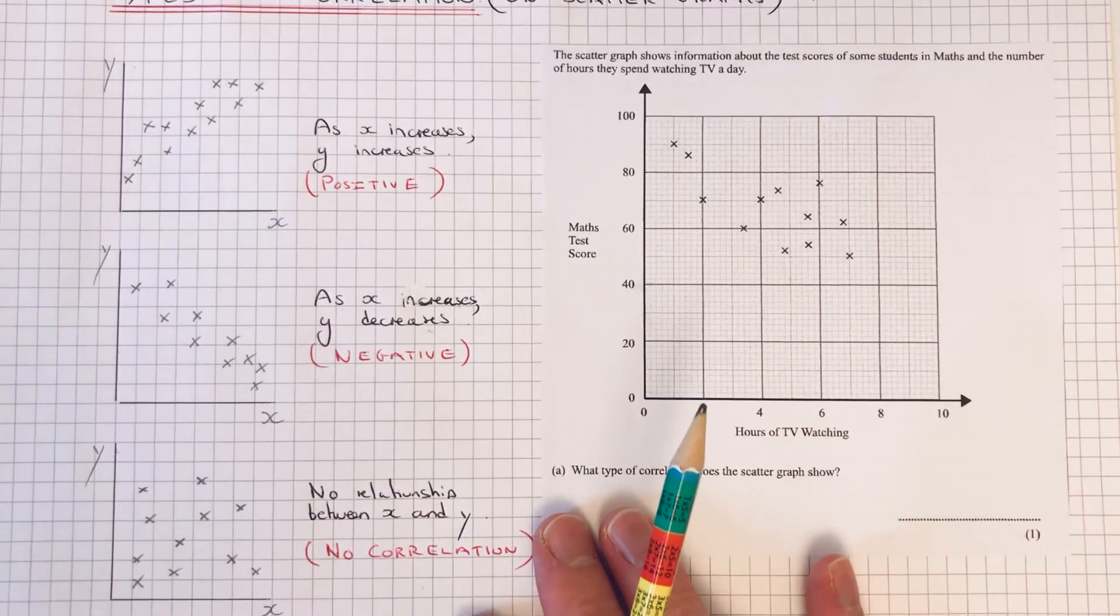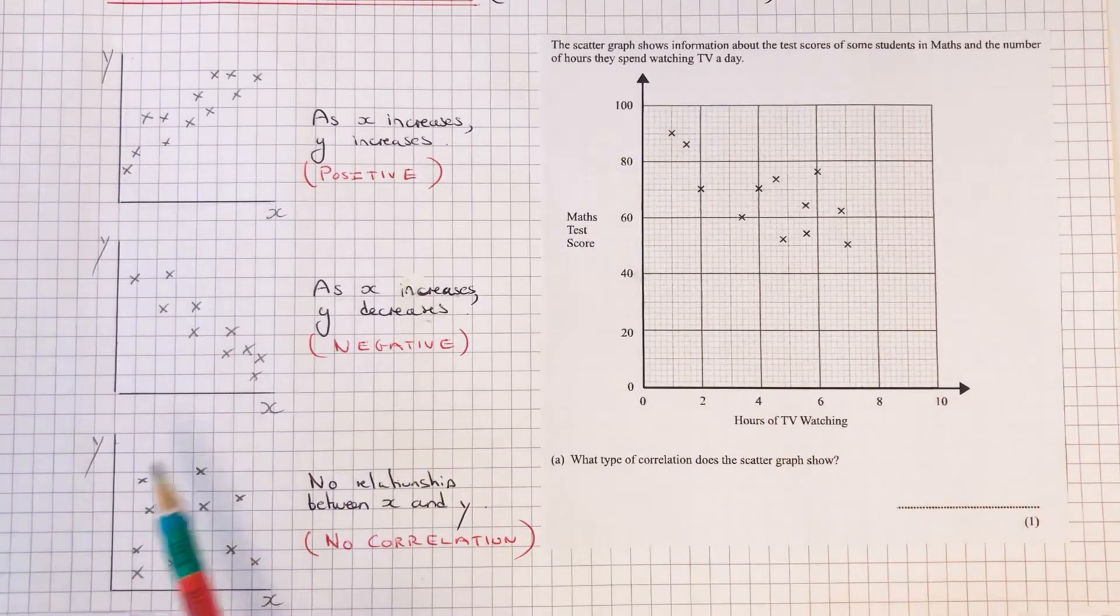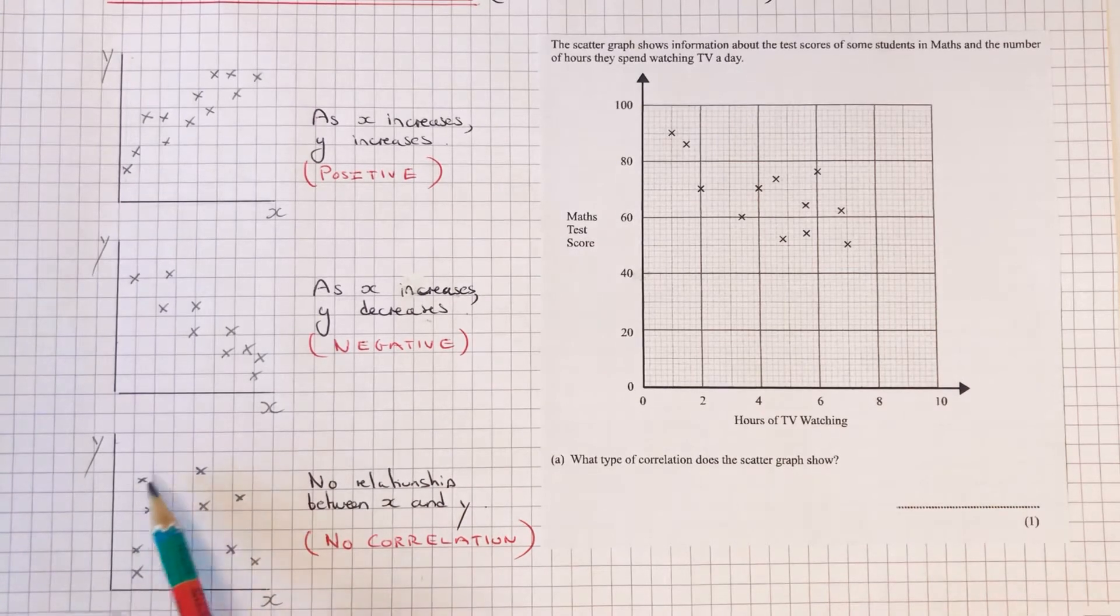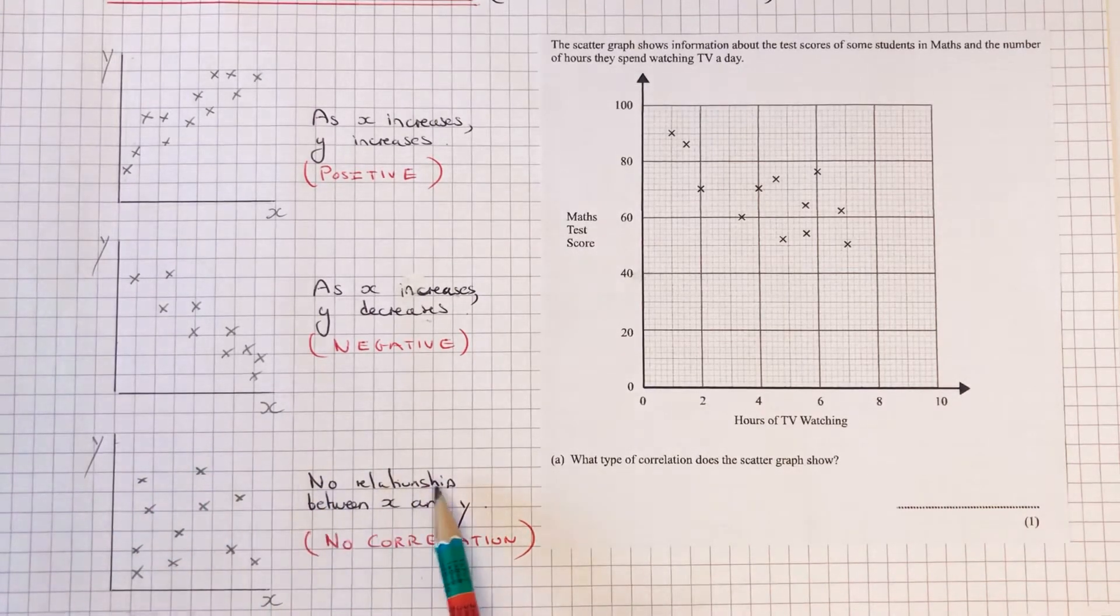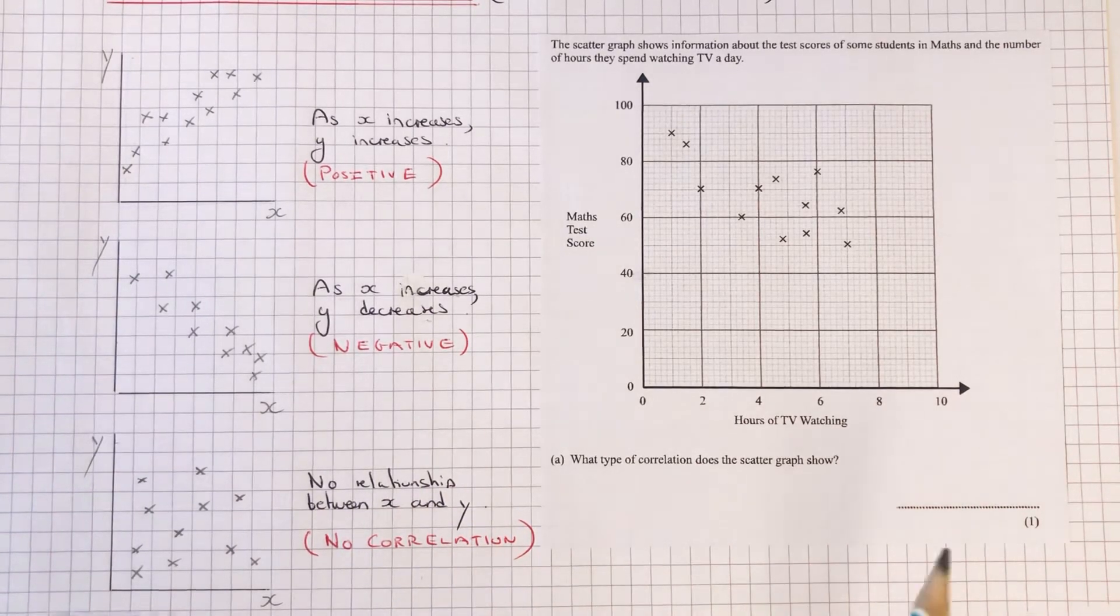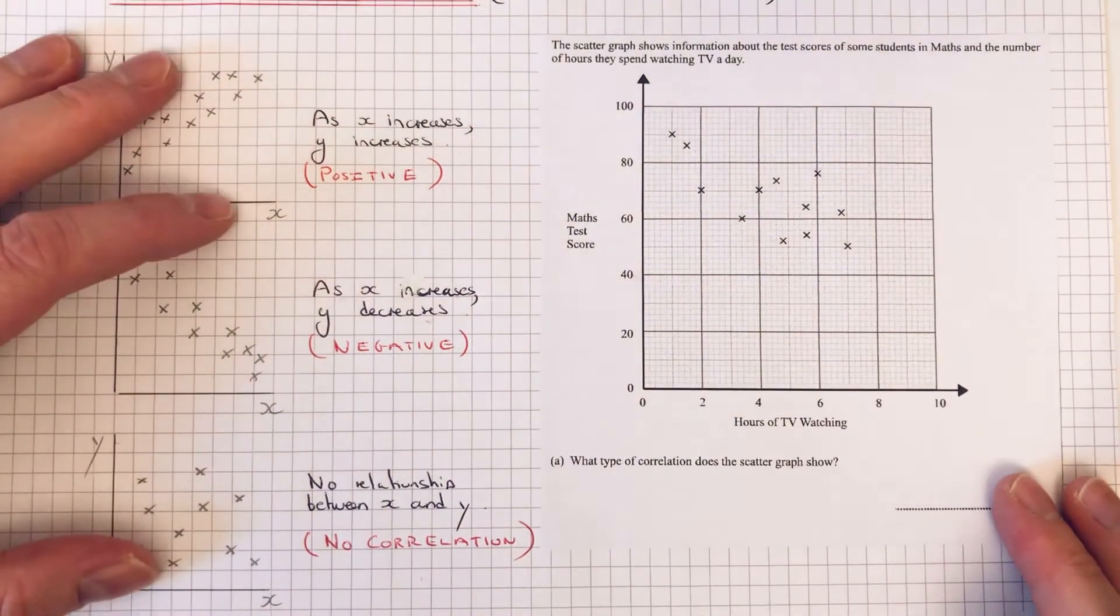And if it's none of the first two and the points are scattered in different places on the graph, this means there's no relationship between x and y. So we just write down no correlation. Let's have a look at a quick example.